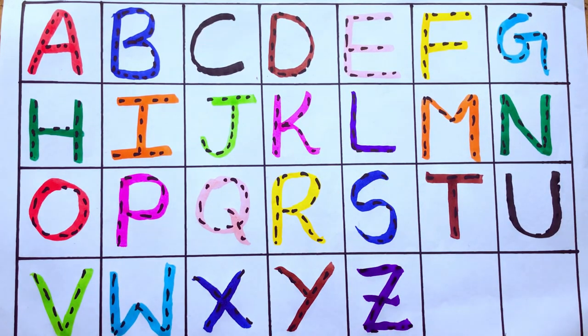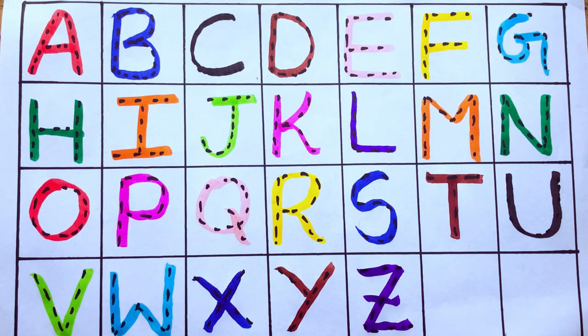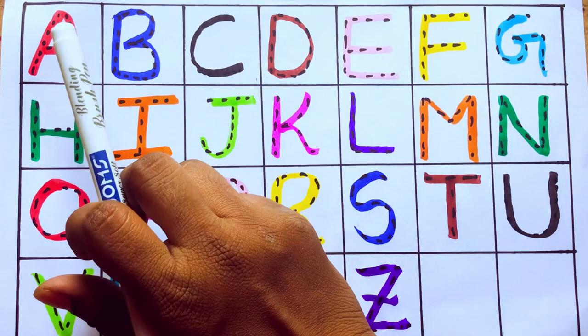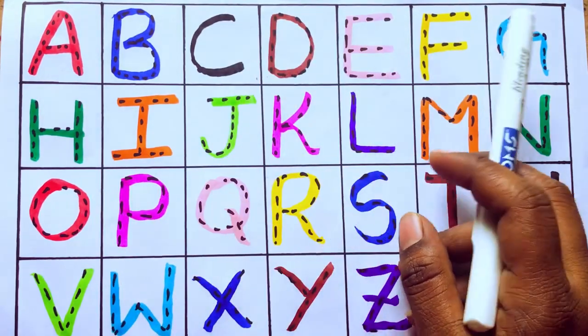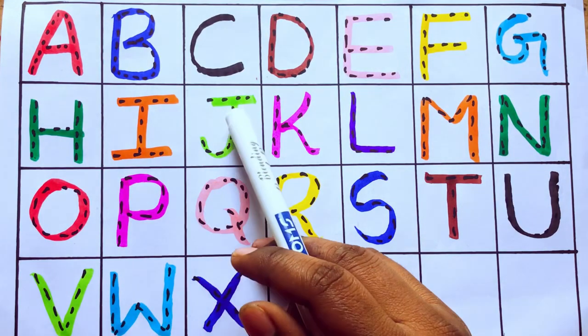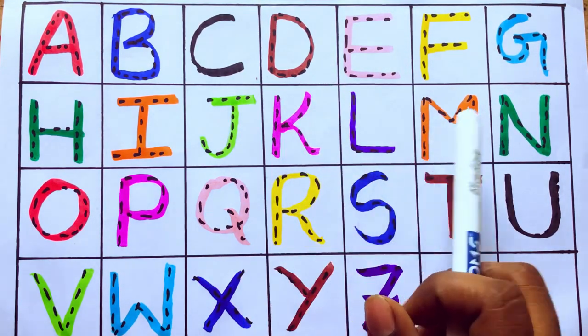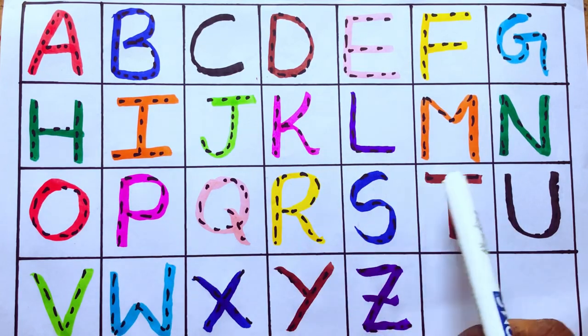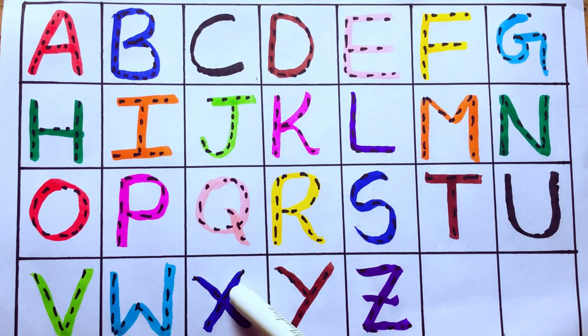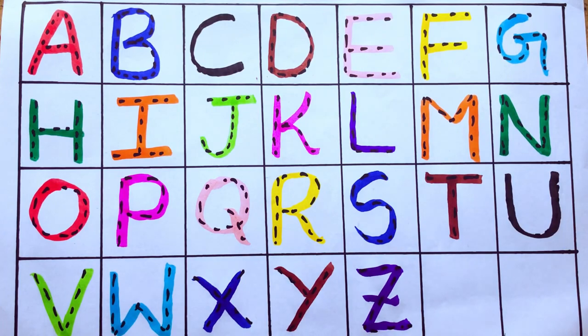Let's recite the alphabet: A, B, C, D, E, F, G, H, I, J, K, L, M, N, O, P, Q, R, S, T, U, V, W, X, Y, Z. Okay, bye!